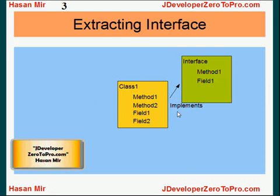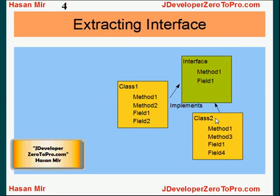Later on, if you want, you can create sibling classes of Class 1. For example, you could create Class 2, and Class 2 would also implement the same interface. That means Class 2 should have Method 1 and Field 1. Other than Method 1 and Field 1, Class 2 could have its own methods and fields as well — for example, Method 3 and Field 4. So both of these classes implementing this interface is a method of enforcing selected methods and fields onto the classes.